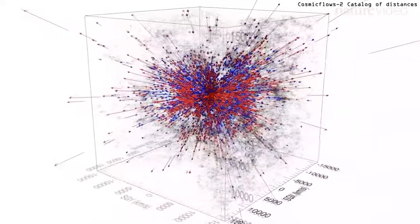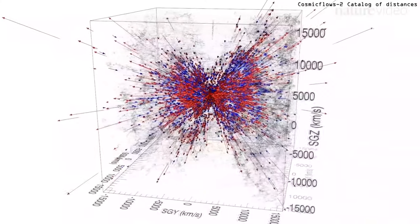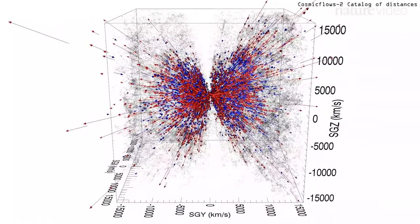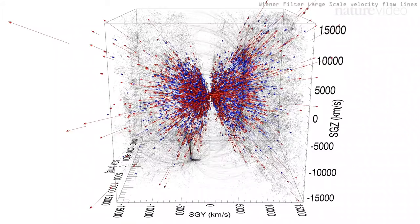With this data, they were able to create a map of the paths galaxies are migrating along. These paths are called cosmic flows.